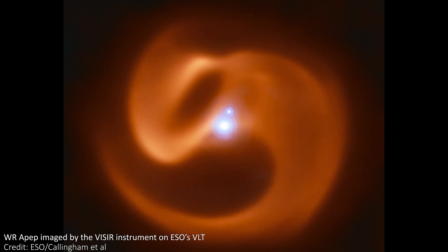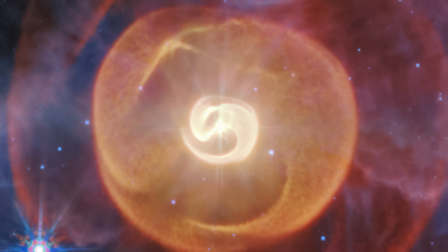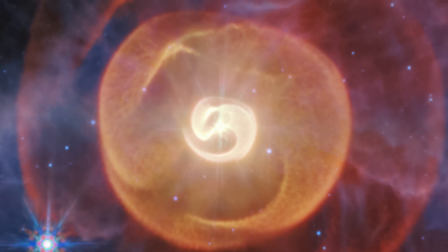Before JWST, previous observations of this same object only showed one shell of space material, but with JWST we can now see four, one expanding beyond the next in identical patterns.